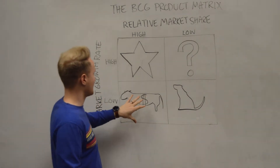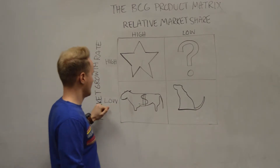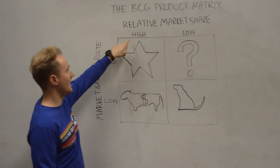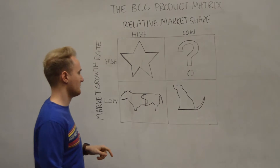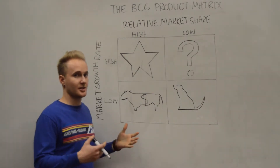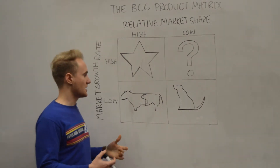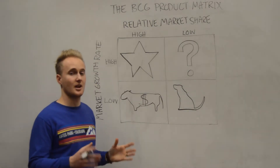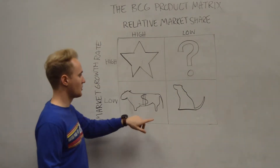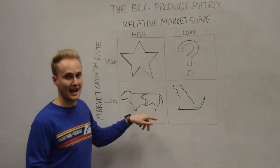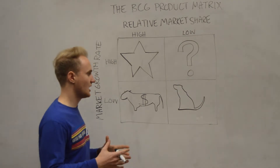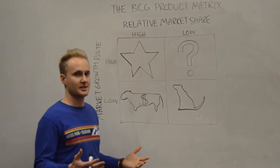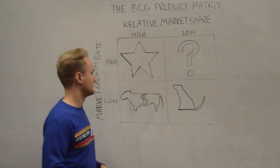At the bottom here we have low market growth rate and high relative market share, meaning this market really isn't going to grow all that much, but this product has a lot of the market share — a lot of customers buy this product. We call that a cash cow. There's a lot of cash generated from it, but nothing's really going to grow in the future.